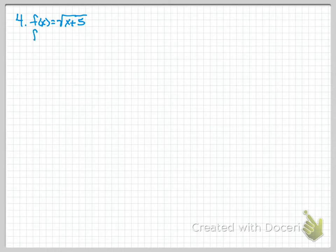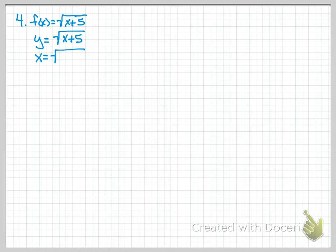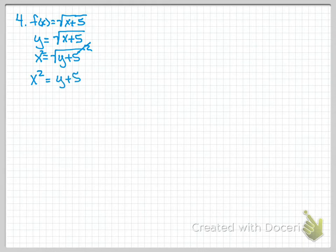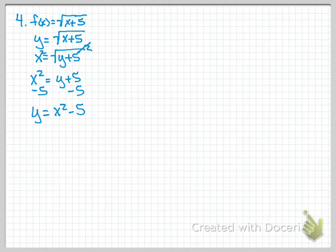So, y is equal to the square root of x plus 5. We're going to switch our x and y: x equals the square root of y plus 5. We need to get rid of that square root before we can get rid of the 5, so I'm going to square both sides. The radical and exponent cancel, giving us x squared equals y plus 5. Now subtract 5, and we end up with y equals x squared minus 5. So this is our inverse function.